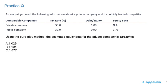One last practice question going over these calculations again. An analyst gathered information about a private company and its publicly traded comparable. The comparable public company has a tax rate of 35%, debt-to-equity of 0.9, and equity beta of 1.75. The private company has a tax rate of 30%, debt-to-equity of 1%, and the equity beta is not available. Using the pure play method, the estimated equity beta for the private company is closest to: A) 1.029, B) 1.104, or C) 1.877?